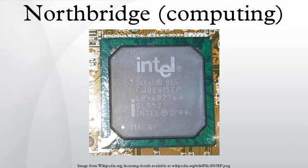The Intel i875 chipset will only work with systems using Pentium 4 processors or Celeron processors that have a clock speed greater than 1.3 GHz and utilize DDR-SDRAM, and the Intel i915G chipset only works with the Intel Pentium 4 and the Celeron, but it can use DDR or DDR2 memory.